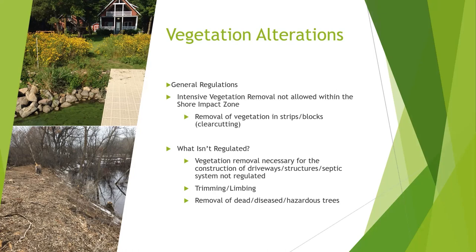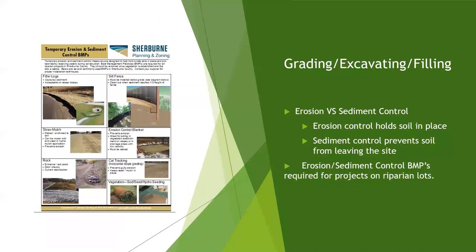Grading, excavating, and filling is another regulated item within the shore impact zone. One of the big things that comes up is erosion control versus sediment control. Erosion control includes practices that hold soil in place — such as straw on disturbed soil or straw blanket erosion control mats. Sediment control prevents soil that has eroded from leaving the site — examples include silt fence, filter logs, or bio logs. These best management practices are required on projects on riparian lots where soil is disturbed.